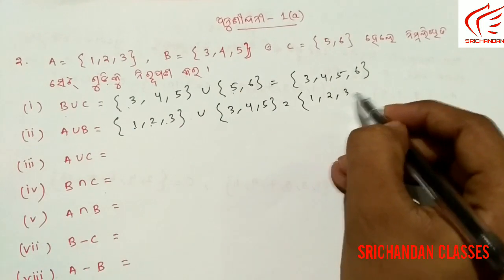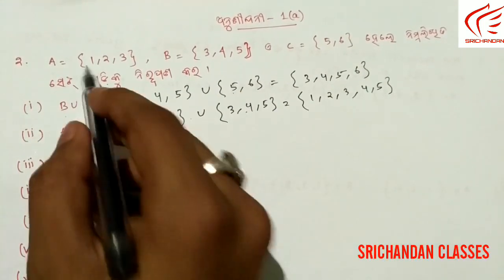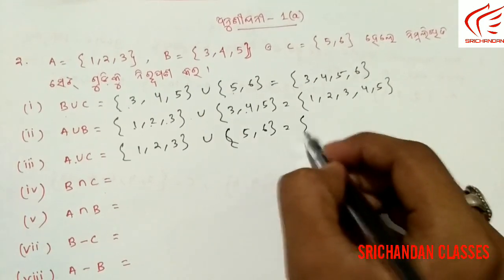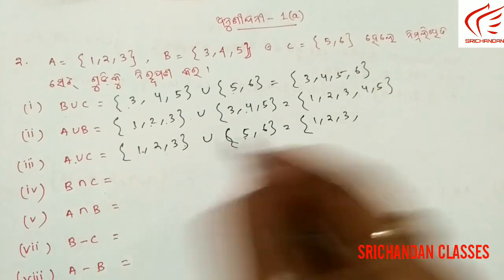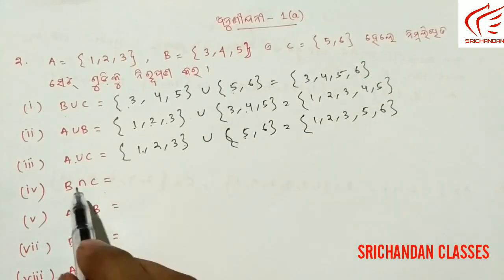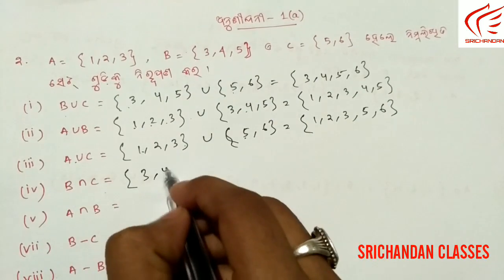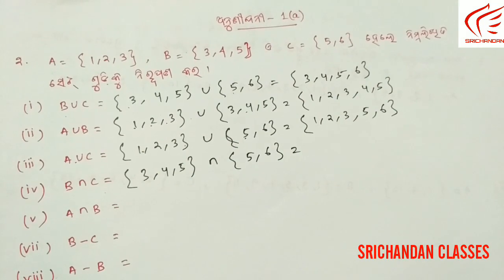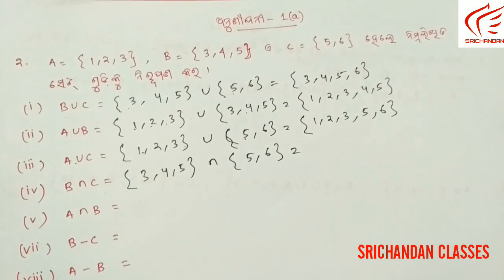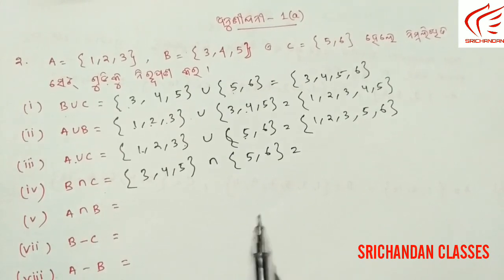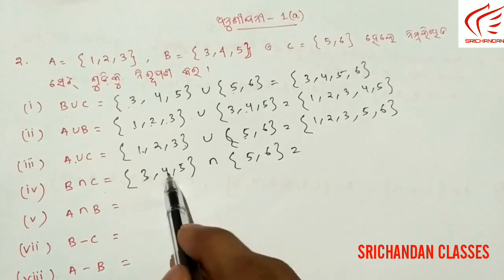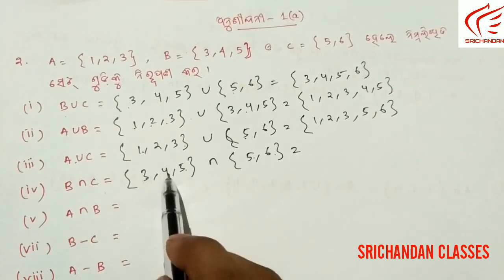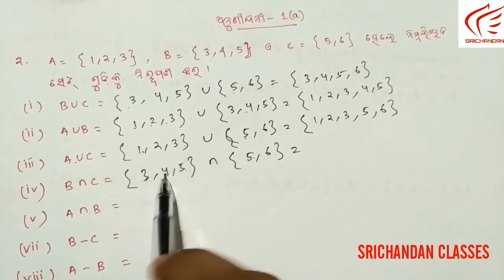A union B = {1, 2, 3, 4, 5}. A union C: A = {1, 2, 3} union C = {5, 6}, so A union C = {1, 2, 3, 5, 6}. B intersection C: B = {3, 4, 5} intersection C = {5, 6}. Common elements between B and C: only 5 is common. So B intersection C = {5}.